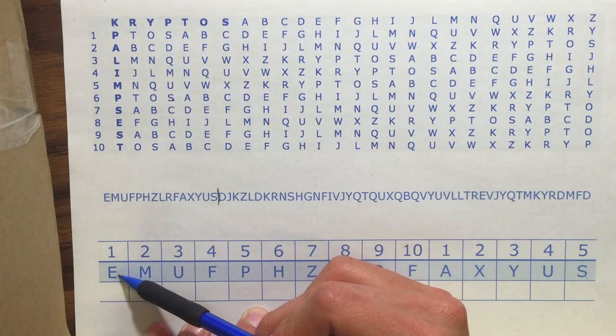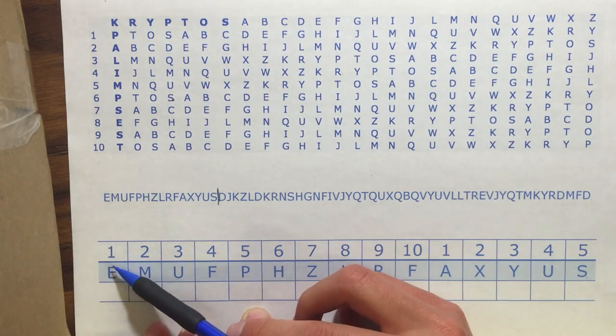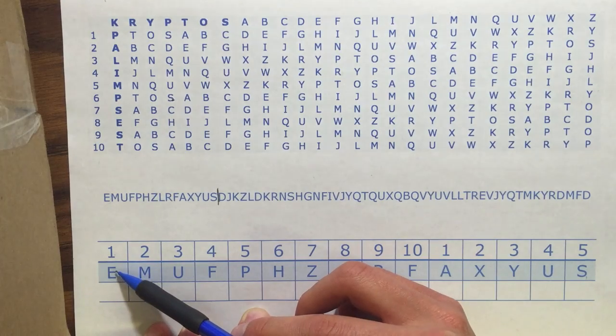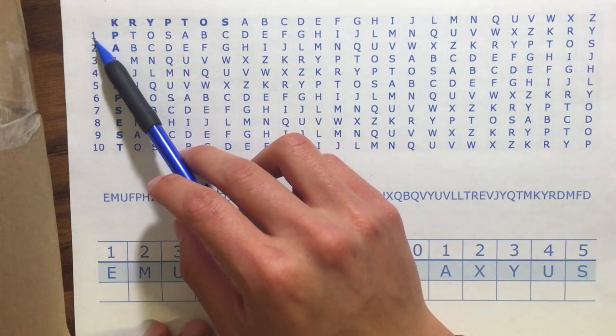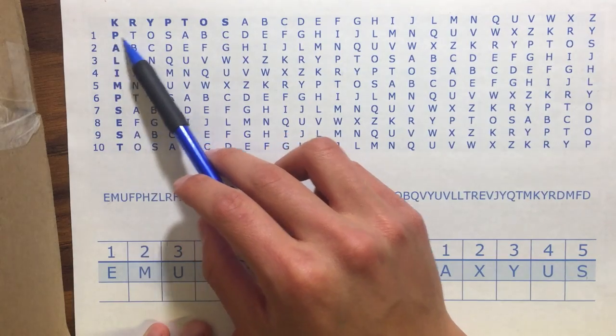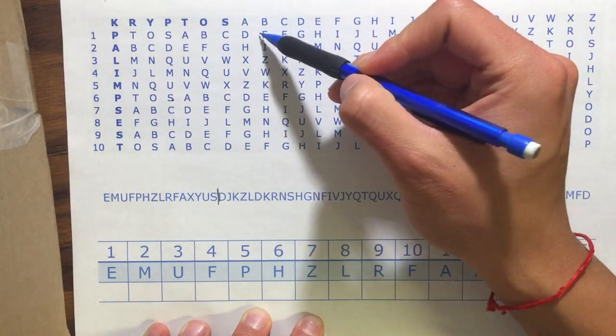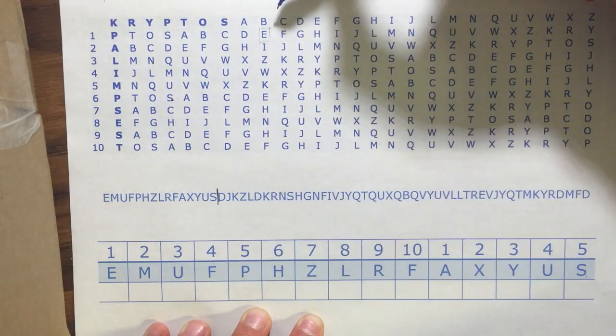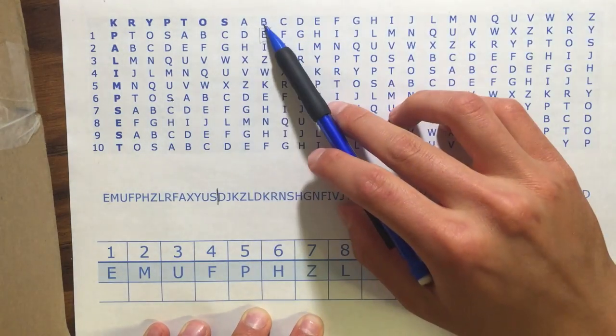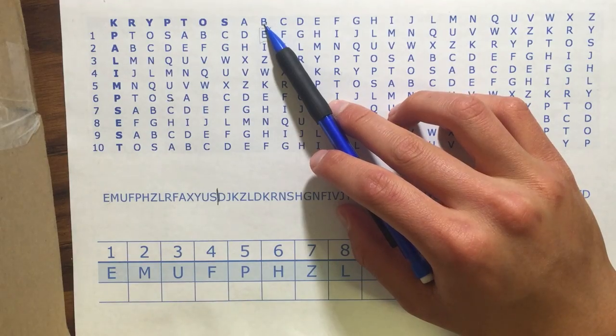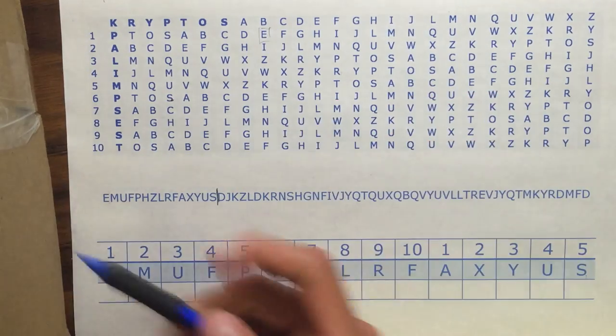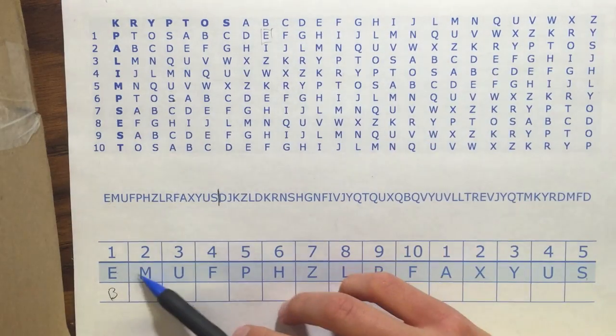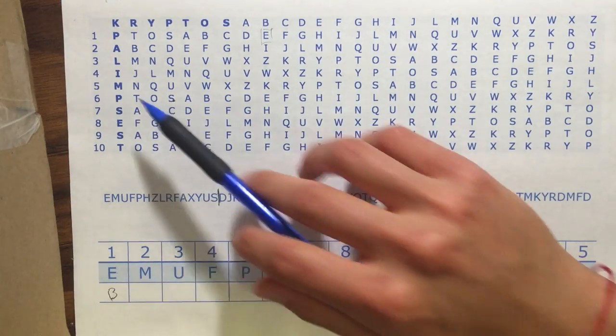The first step is to take the letter which in this case is E and this is the first letter. You find the letter E in the first row, so you go to the first row, find the letter E and then you go up to the default alphabet and you find the corresponding letter which in this case is B. So write down B.